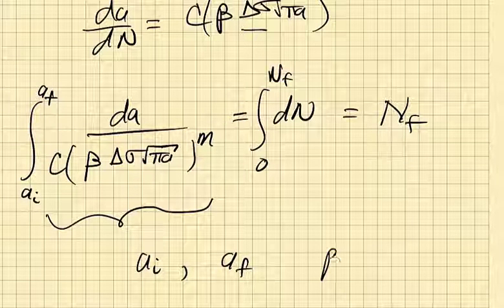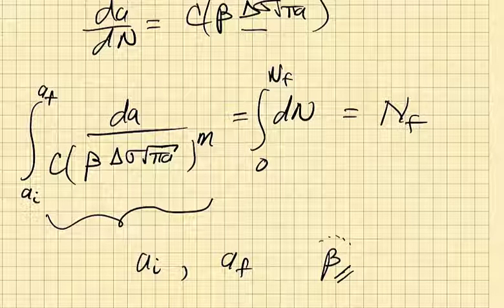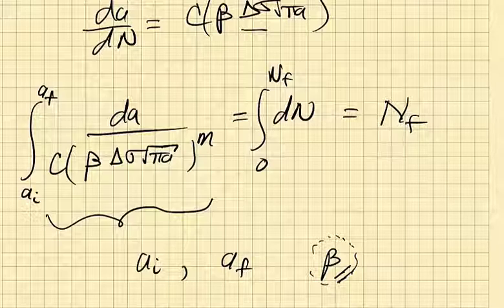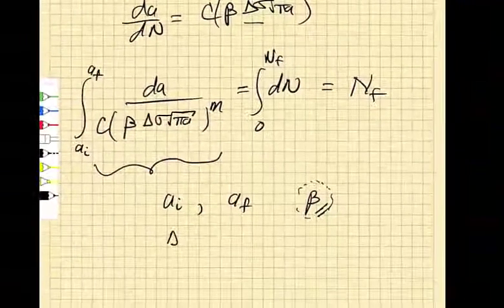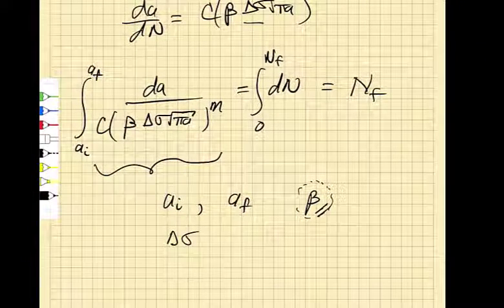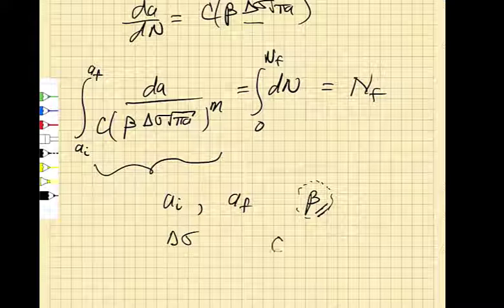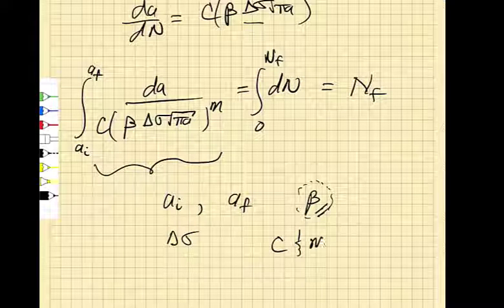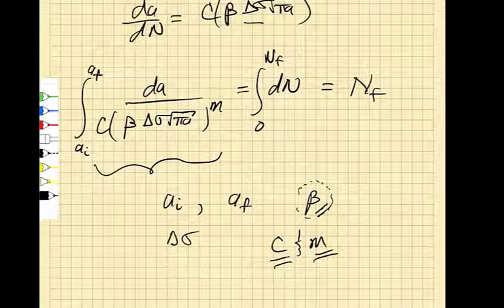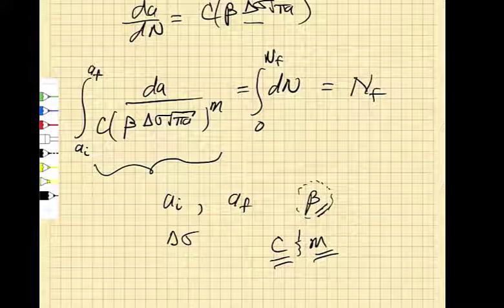I got a problem with beta because that geometric correction factor could be changing. But I'll just use the beta that corresponds to the intermediate range for the crack sizes. I know what my delta sigma is. And so I can do this integral. I need the fitting parameters C and M, however, in order for me to do that integral. But it's a relatively straightforward thing to do.